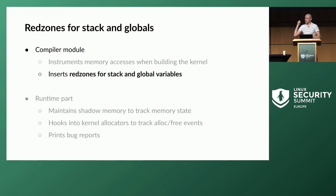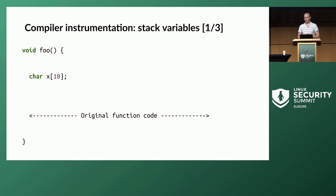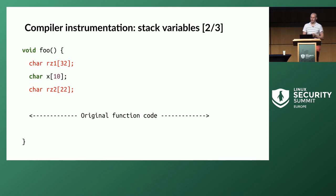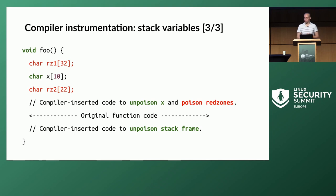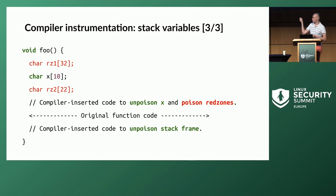KASAN is also able to detect bugs in stack and global variables, done with help from the compiler. For a function with a 10-byte stack array, KASAN adds red zones on the stack around the array, and adds code to poison the red zones and unpoison the stack allocation. Before the original function code, we have code to unpoison x and poison the red zones; after the function code, the compiler inserts code to unpoison the whole stack frame, cleaning up after itself. If there are multiple stack variables, there are red zones between each of them.